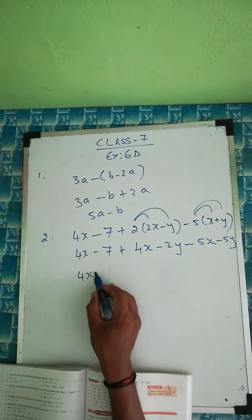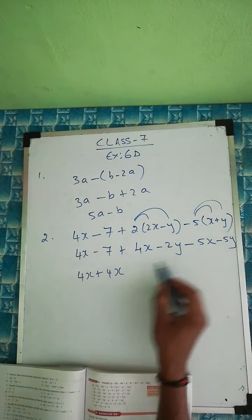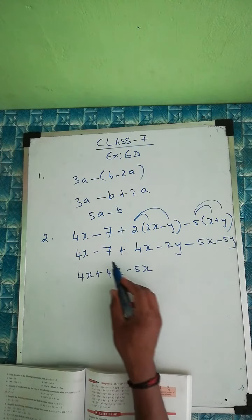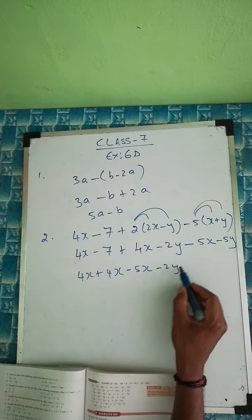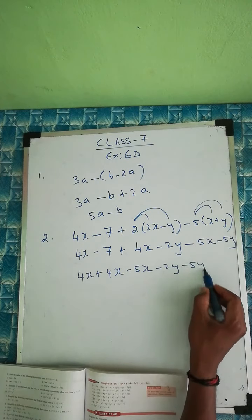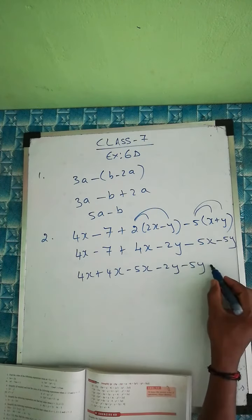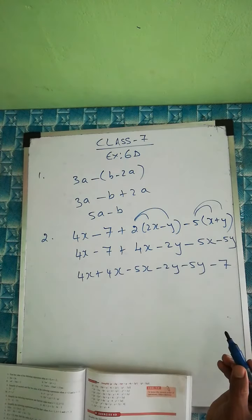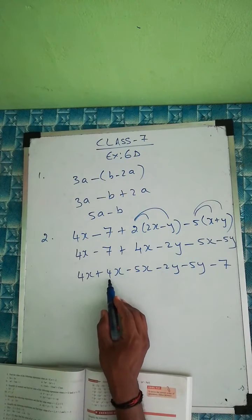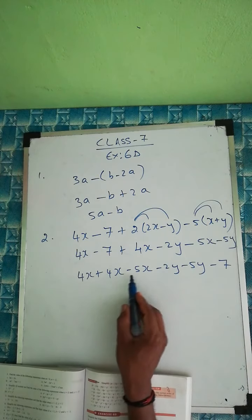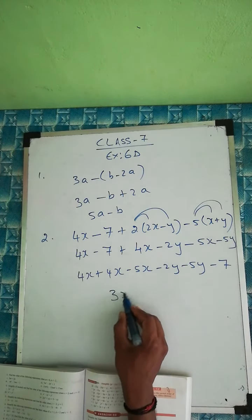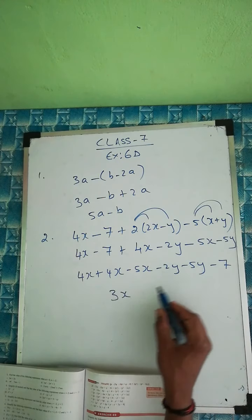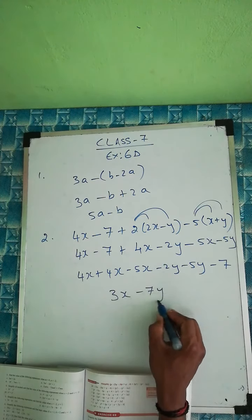Continuing: minus 5 times y is minus 5y. So we have 4x plus 4x minus 5x, minus 2y minus 5y, and the last number minus 7. That gives us 3x minus 7y minus 7.